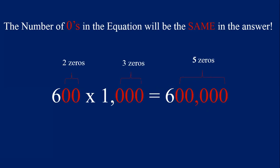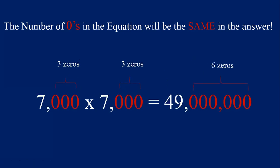Let's try 600 times 1,000. What is 6 times 1? Any number multiplied by 1 is that number, so 6 times 1 is 6 — write that first. Count the zeros: 1, 2, 3, 4, 5 zeros in the equation. Write five zeros after the 6. 600 times 1,000 equals 600,000 — a six with five zeros, a six-digit number.